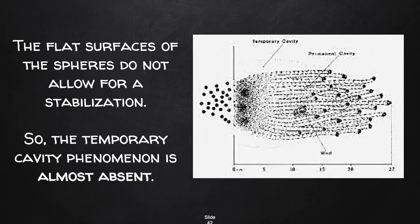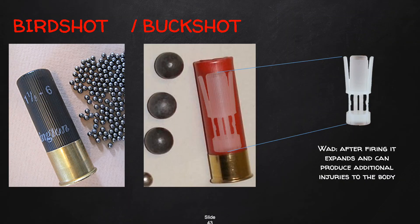The flat surface of the spherical pellets does not allow their stabilization, so the primary injury produced by a shotgun is the permanent cavity, while the temporary cavity is almost absent. Smooth-barrel shotguns typically use two types of ammunition: birdshot, which consists of very small pellets, and buckshot, which consists of larger pellets — both used for different types of hunting. Both cartridge types contain a wad, a plastic component that expands after firing and can produce additional injuries to the body.